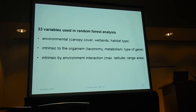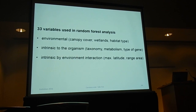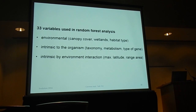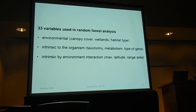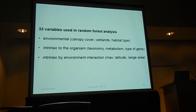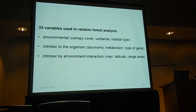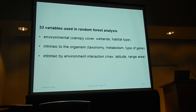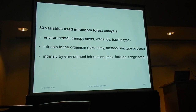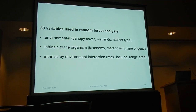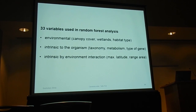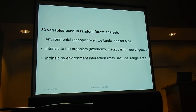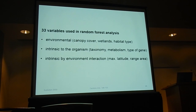We ended up with 33 different variables to include in the random forest analysis. Some are environmental — properties of the abiotic environment like canopy cover, whether it's wetland, or a particular type of habitat. Some are intrinsic to the organism itself, like taxonomy, type of metabolism, or the gene that was used. Others we argued about, because something like maximum latitude seems extrinsic but is also something species are adapting to physiologically. This third category represents interactions between traits intrinsic to the organism and extrinsic to the environment.